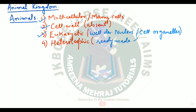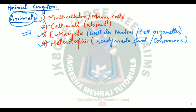The fourth condition is that the organism needs to be heterotrophic. Heterotrophic means this organism always feeds on ready-made food — they are consumers. Unlike plants, which are producers and can perform photosynthesis and are autotrophs, animals are heterotrophs. So the four conditions are: multicellularity, absence of cell wall, eukaryotic cells, and heterotrophic in nature.